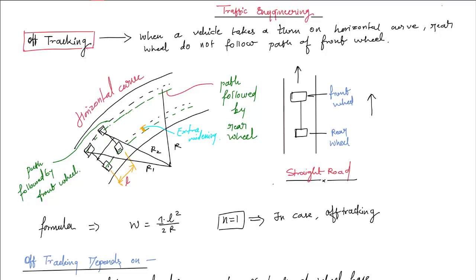In the road user characteristics we saw about the physical characteristics, mental characteristics, psychological characteristics, environmental factors, and driver characteristics. In vehicular characteristics we saw about the dynamic and static. That is all about the traffic characteristics.